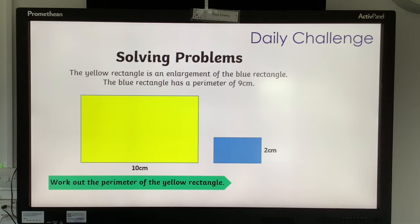The next one. The yellow rectangle is an enlargement of the blue rectangle. The blue rectangle has a perimeter of 9 centimetres. Work out the perimeter of the yellow rectangle. So concentrate on that one and see how you can work that out.